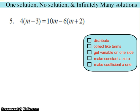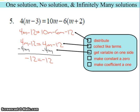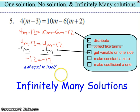Look at the second example. We have some distribution that we're going to have to do, and we do have to collect some like terms to get to the next step. Once we've simplified, here's a big clue: 4m minus 12 equals 4m minus 12. When we do our step to get variables on one side, we get a number equal to itself, which is a sign that we've got infinitely many solutions.